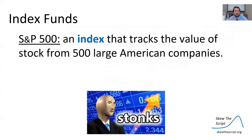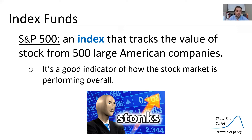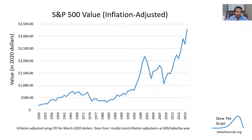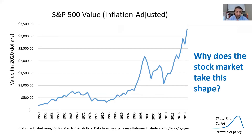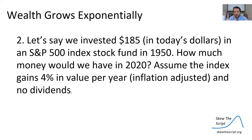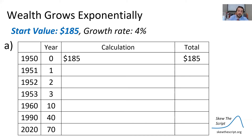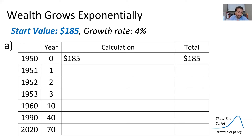Now we can think of this in terms of an exponential growth model. The S&P 500 is an index that tracks the value of stock from 500 large American companies and is generally a good indicator of how the stock market is performing overall. Here's a chart of the S&P value adjusted for inflation over time, and you can see it's generally been going up. The general thought behind this is that wealth grows exponentially. Let's say we invested $185 in today's dollars in an S&P 500 index fund in 1950. How much money will we have in 2020? We'll assume the index gains 4% in value per year adjusted for inflation. We can use a table to calculate this growth, starting with $185 and a growth rate of 4%, from year zero all the way up to year 70.